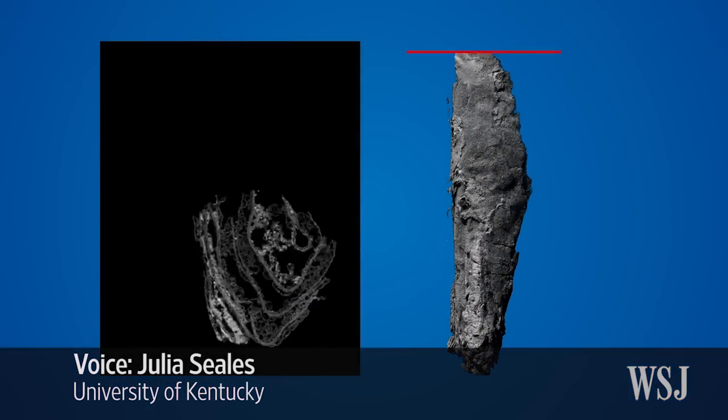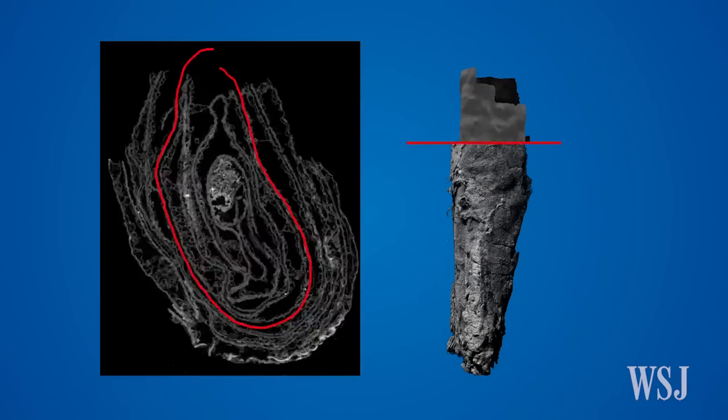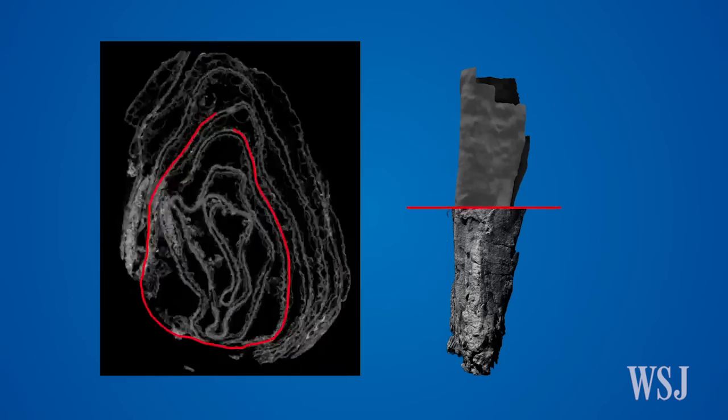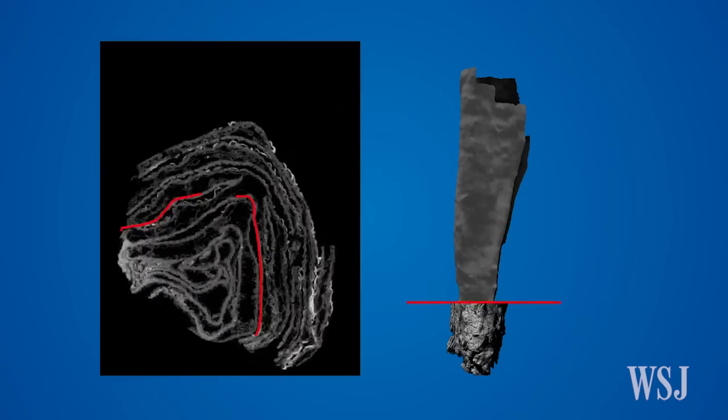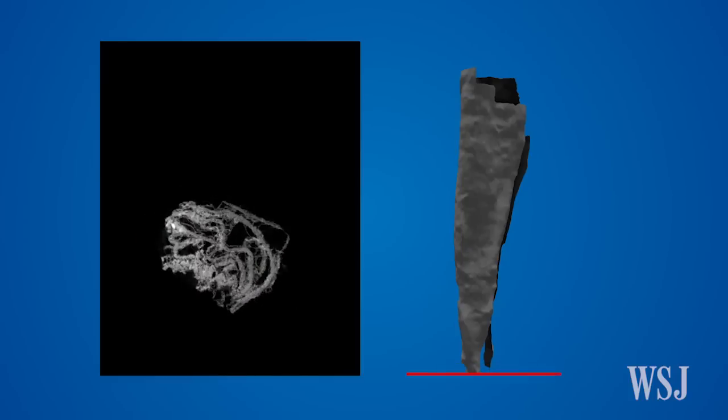First we capture the 3D shape of the layers of the scroll in a process called segmentation. On the left side of the screen the software moves through the scroll image by image tracing the shape of a single scroll wrap. On the right we see the 3D model that this produces.